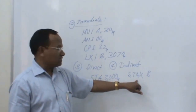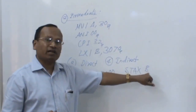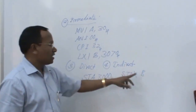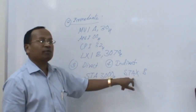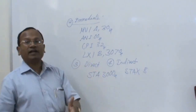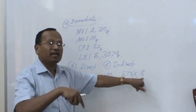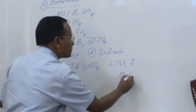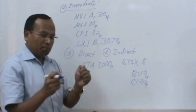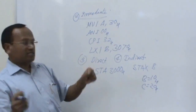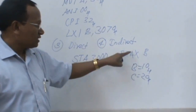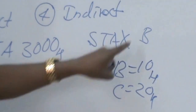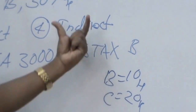Now consider another example: STAX B. Wherever 'X' is there, a register pair is involved. Here the register pair is BC — store accumulator indirectly. We call it indirect because it also stores the content of the accumulator at the memory address specified by the register pair. When I say STAX B, B and C will have certain content — for example, B is 10H and C is 20H. Combined as a register pair, BC is 1020H. So the content of A will be copied into memory address 1020H, and since this memory address is not directly given, this falls under indirect addressing mode.